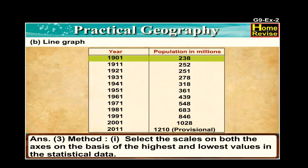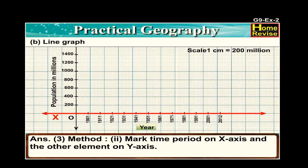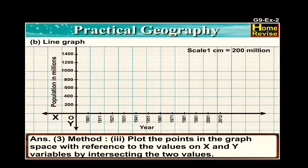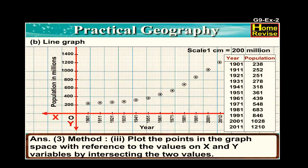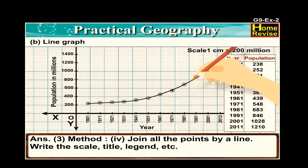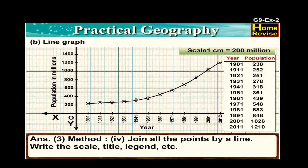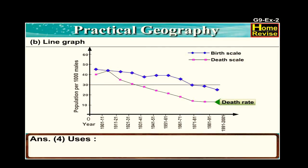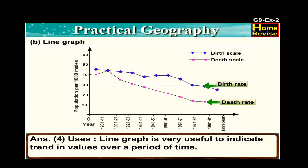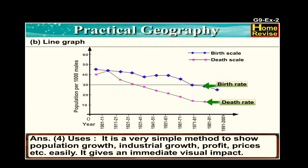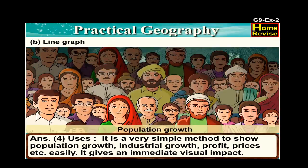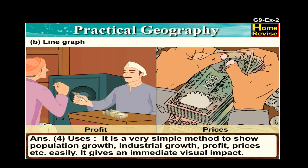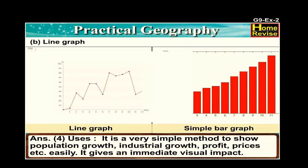Method: first, select the scales on both axes on the basis of the highest and the lowest value in the statistical data. Second, mark the time period on the x-axis and the other element on the y-axis. Third, plot the points in the graph space by intersecting the two values. Fourth, join all the points by a line and write the scale, title, legend, etc. Uses: a line graph is very useful to indicate trends and values over a period of time. It is a simple method to show population growth, industrial growth, profit, prices, etc., and gives an immediate visual impact.